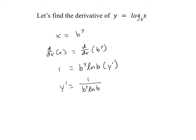We'd like to have this derivative in terms of X, and we can do that by replacing B to the power of Y with X, since B to the power of Y equals X. So the derivative of log base B of x is simply 1 over X times the natural log of B, where X is the value inside the logarithm and B is the base.